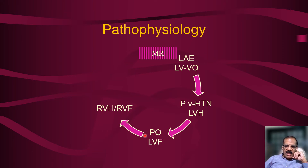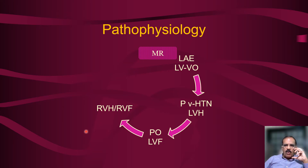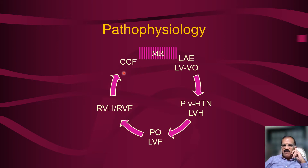Pulmonary venous pressure is transmitted back through the pulmonary capillaries into the right side, causing pulmonary arterial hypertension. This leads to right ventricular hypertrophy and then right ventricular failure. Combined with pre-existing left ventricular failure, it results in biventricular failure — congestive cardiac failure (CCF).